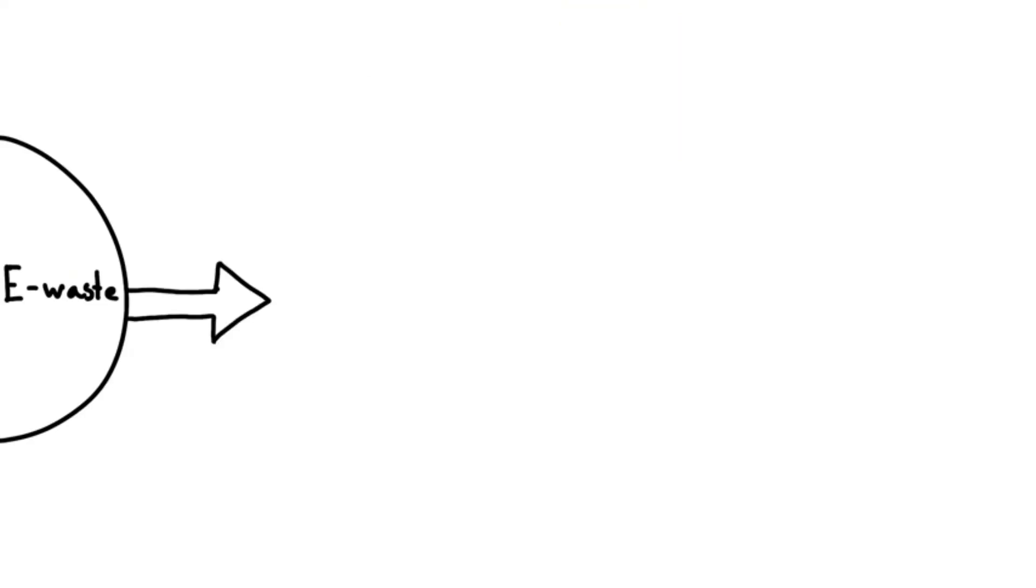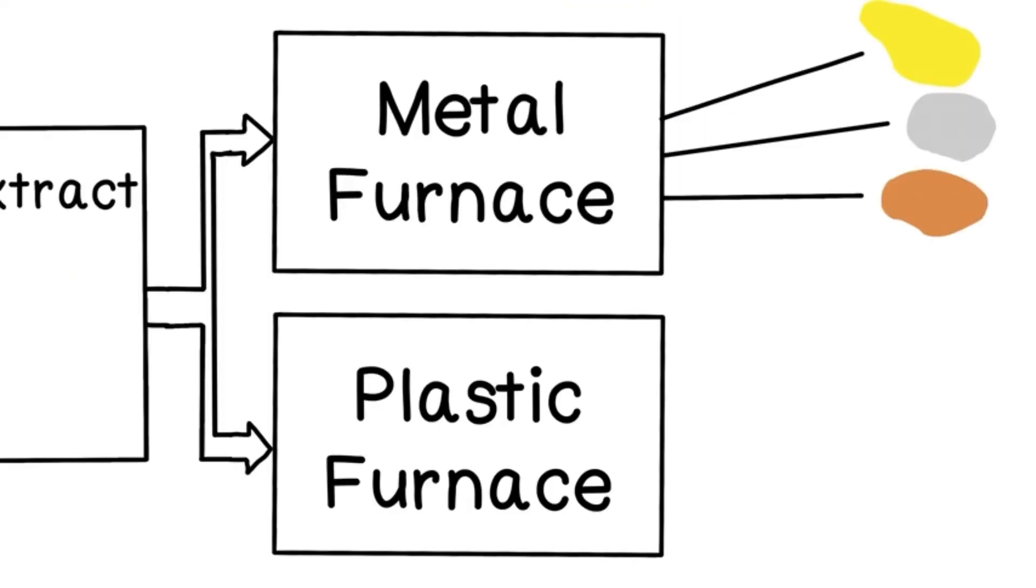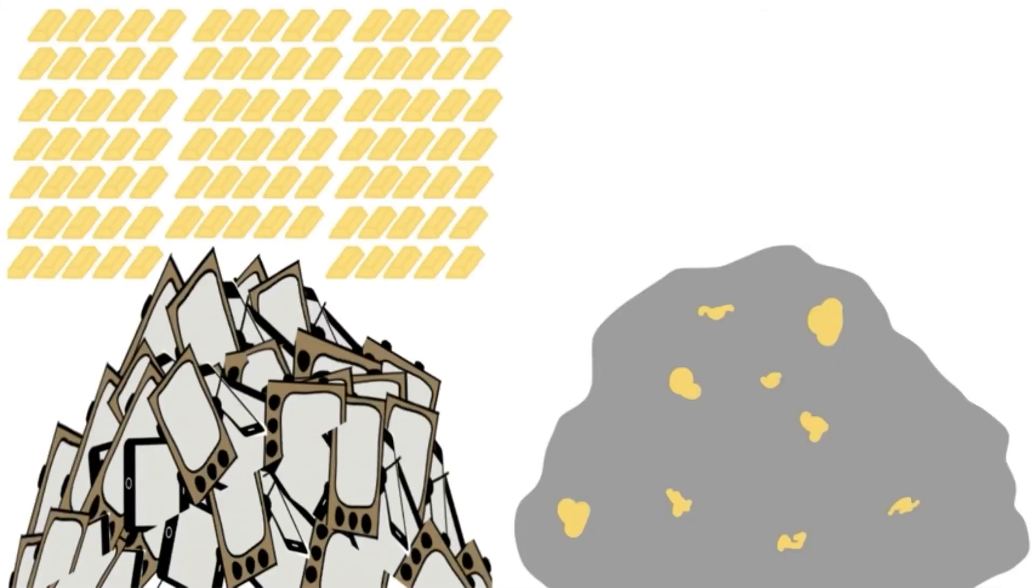Automatic robotic modules are used to break down, sort, and extract useful parts. Furnaces melt metals and plastic parts into 3D printer filament. A ton of cell phones yields 100 times more gold than a ton of gold ore.